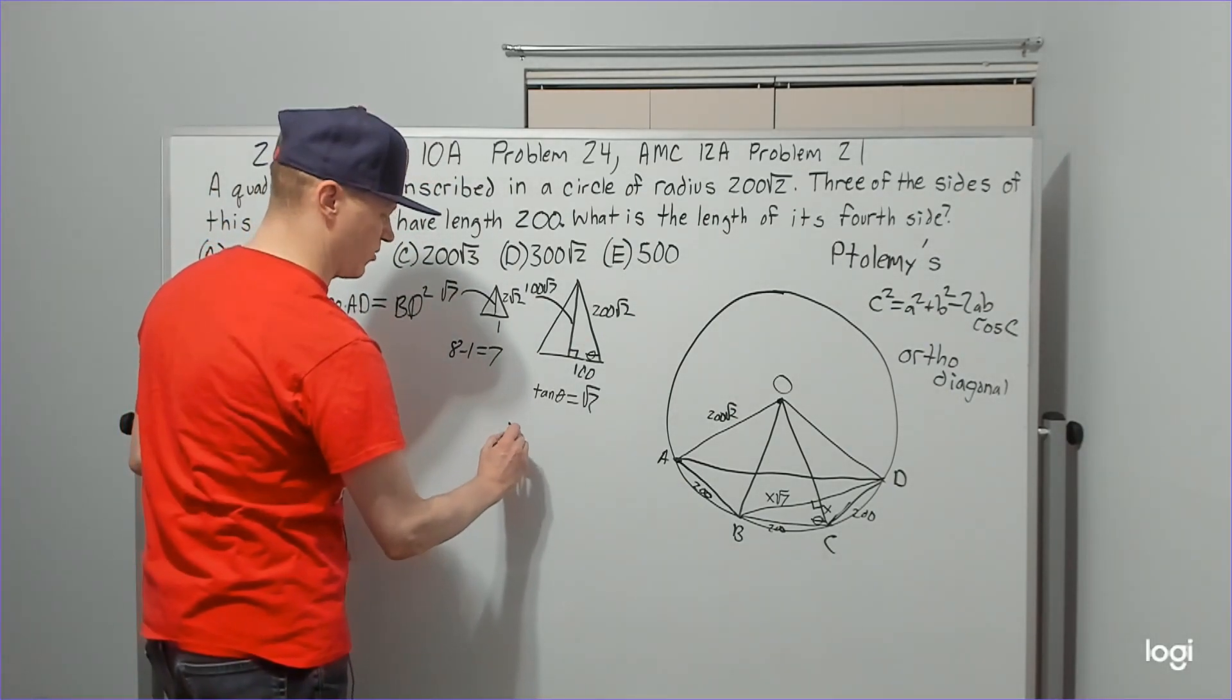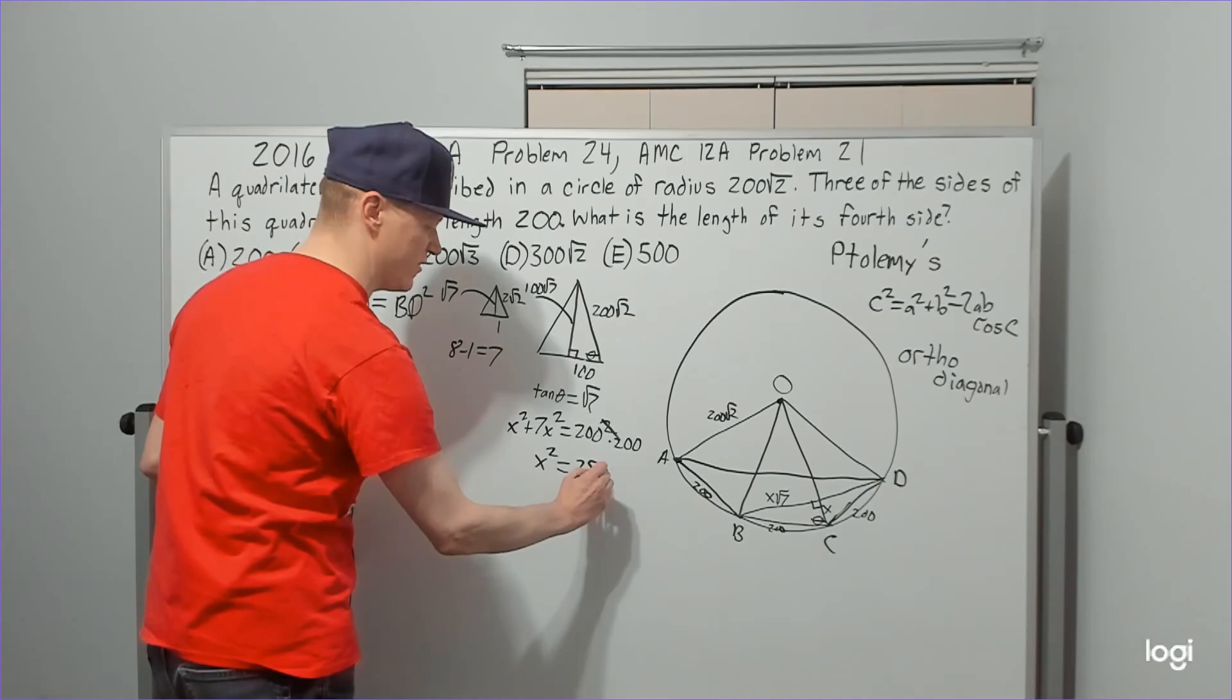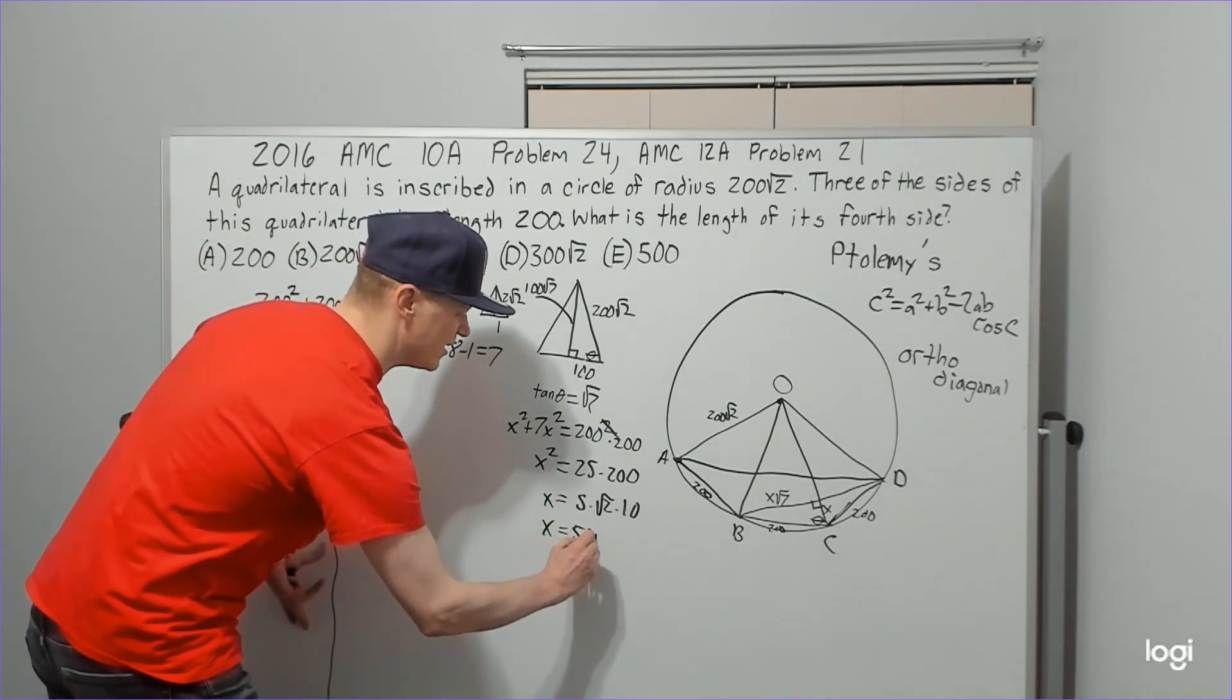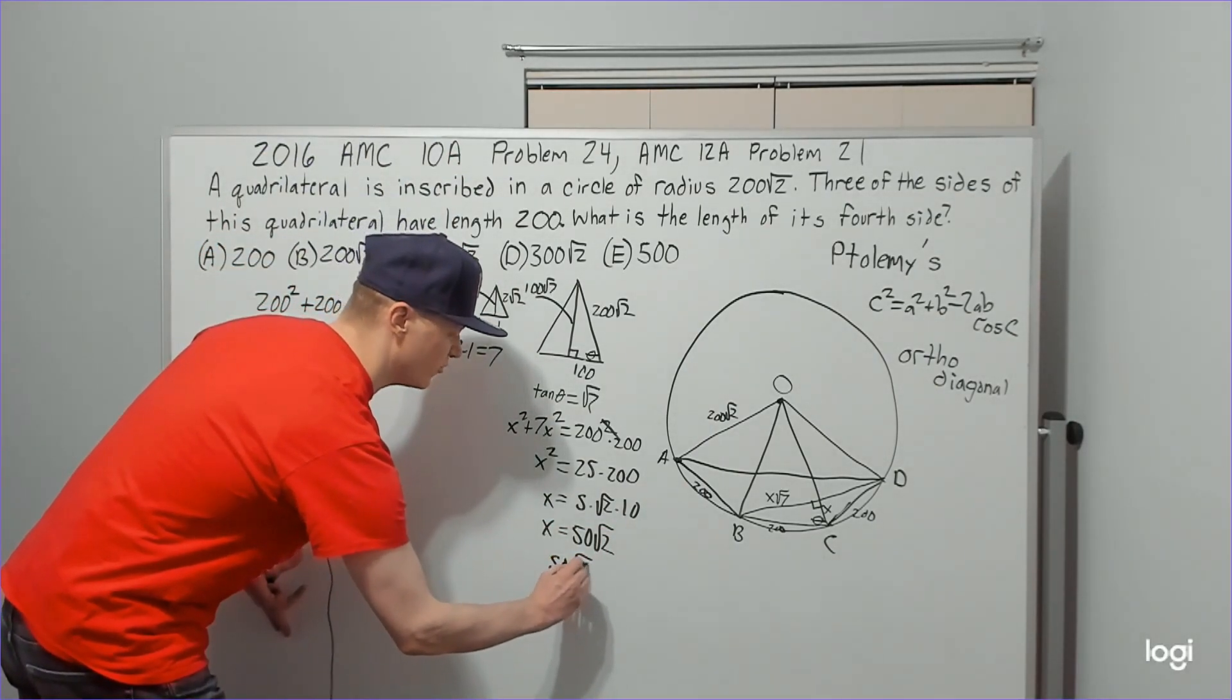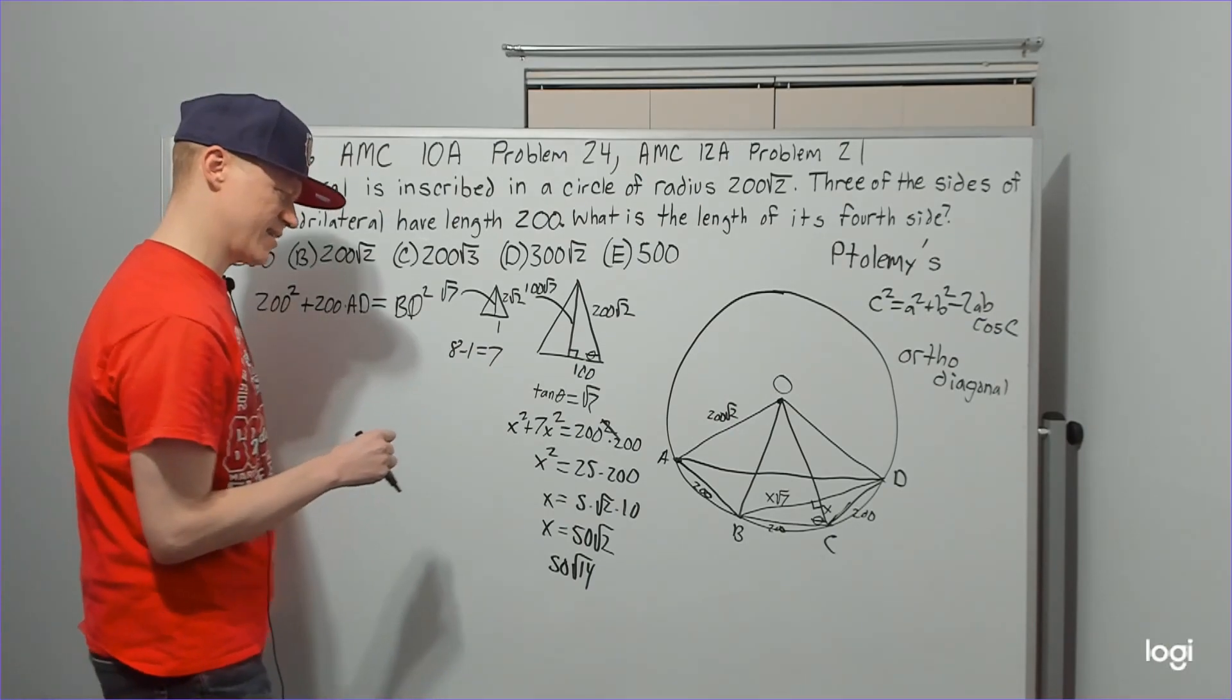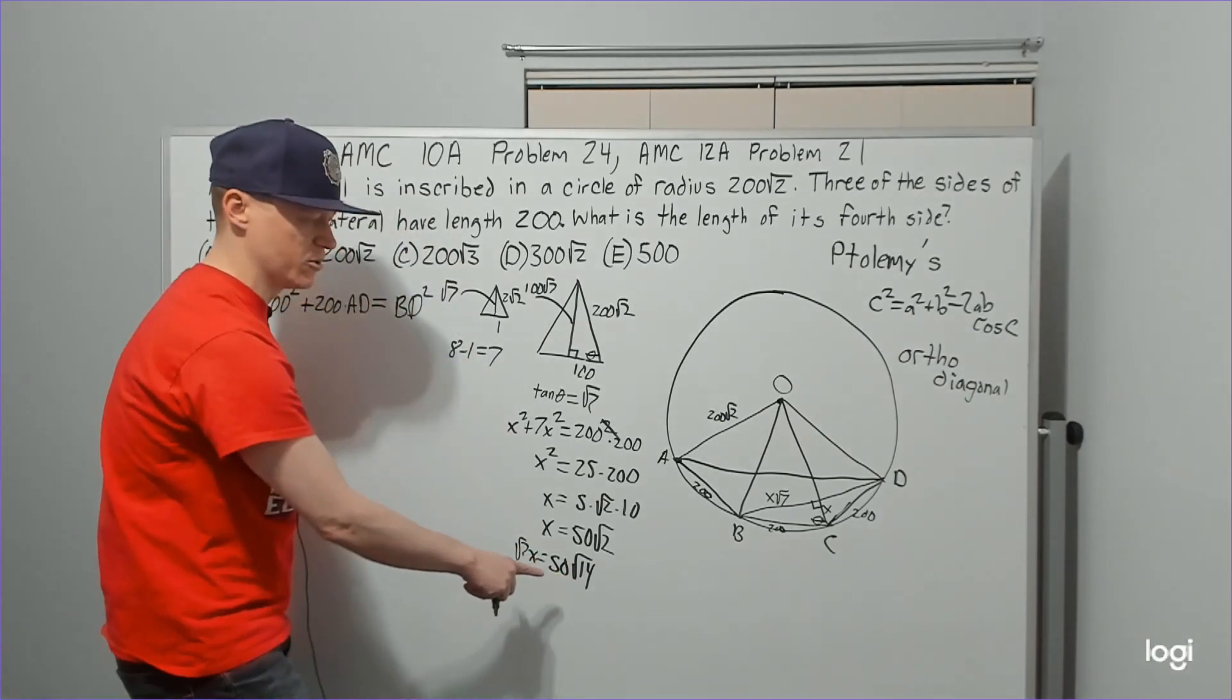All we have to do now to get this X root seven is Pythagorean. So that's not that hard. That's going to be X squared plus seven X squared equals 200 squared. I'm going to write that as 200 times 200. Think of this as eight. I'm going to divide by eight to get 25 times 200. I'm going to square root that to get five times root two times ten. And so you're going to get the X is equal to 50 root two, but we don't want X. We want X root seven. We'll multiply by root seven to get 50 root 14. We're going to pop that over here. This is what BD is, and it's one of the diagonals. We're just going to square that. 50 root 14.